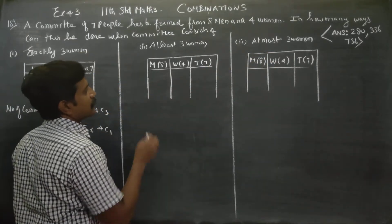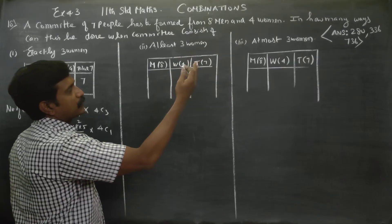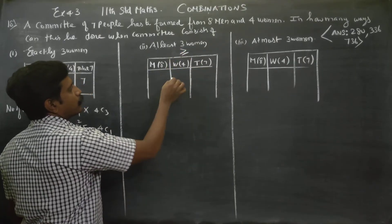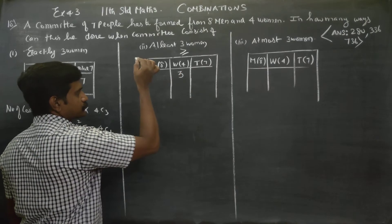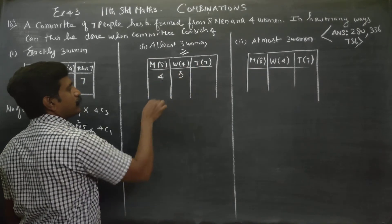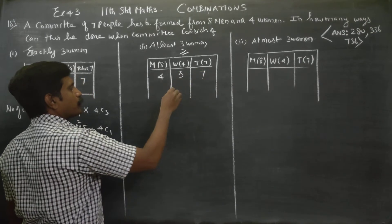Second one: at least three women. At least three women means three or more than three. Three women are compulsory. Let me explain. Total is seven. You have four women available. Now it could be three women or four women.